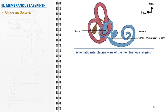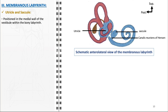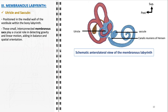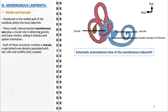The utricle and saccule, residing in the medial wall of the vestibule, are integral components of the membranous labyrinth. These small, interconnected membranous sacs are designed to detect gravity and linear motion, aiding in maintaining balance and spatial orientation. Each contains a macula, a specialized sensory area densely populated with hair cells and covered with otoliths — tiny calcium carbonate crystals. The otoliths add mass to the gelatinous layer above the hair cells, enhancing their sensitivity to head movements. When the head moves, the otoliths shift, causing the underlying hair cells to bend and send signals to the brain about the body's position and movement, crucial for maintaining postural equilibrium and perceiving linear acceleration.